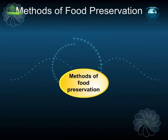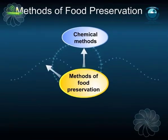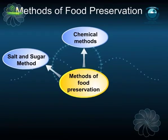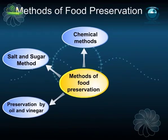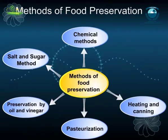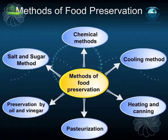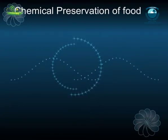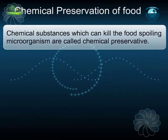Various methods that can be used for the preservation of food are: 1. Chemical methods, 2. Salt and sugar method, 3. Preservation by oil and vinegar, 4. Pasteurization, 5. Heating and canning, 6. Cooling method.